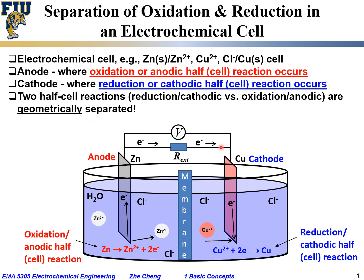There is always a geometric distance — the geometric distance is not zero. Quite often, on the scale of microns, or even millimeters, or even longer scales, there is a separation between where the oxidation or anodic half-cell reaction happens and where the reduction or cathodic half-cell reaction happens. That's what we said is an important feature for electrochemical reactions: the geometrical separation between the oxidation part and the reduction part, between the anodic and the cathodic half-cell reaction.